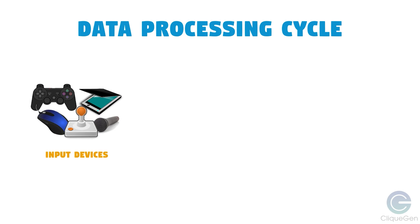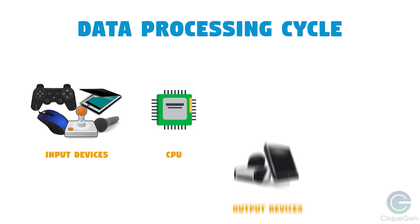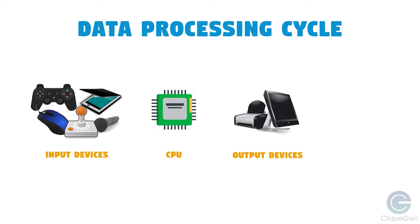Input units are used to enter data and instructions to the computer. The computer works on the data provided to it with the help of the processing unit, called the CPU. This process is called processing of data. As soon as the processing is done, the result given by the computer to the user is known as output, which is displayed on the output unit — either on the monitor or through a printer. Then you can now store the data.